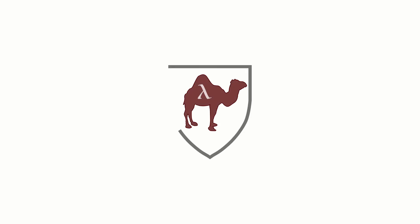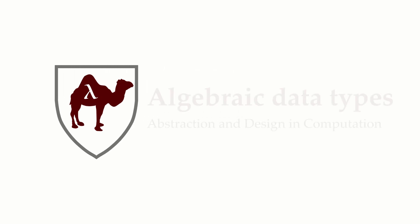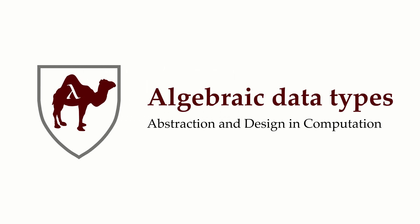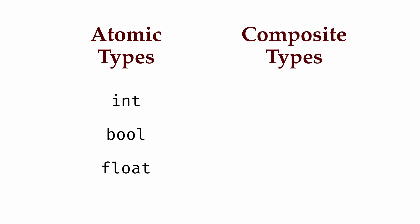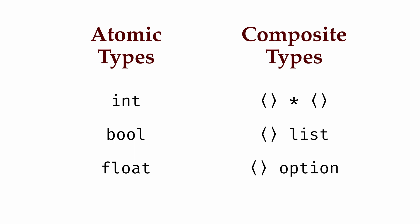We've now seen a variety of different types for expressions. Some of them are atomic types, like int, bool, or float. Others are composite types — types that are constructed from other types. These are types like our tuples, lists, and option types.